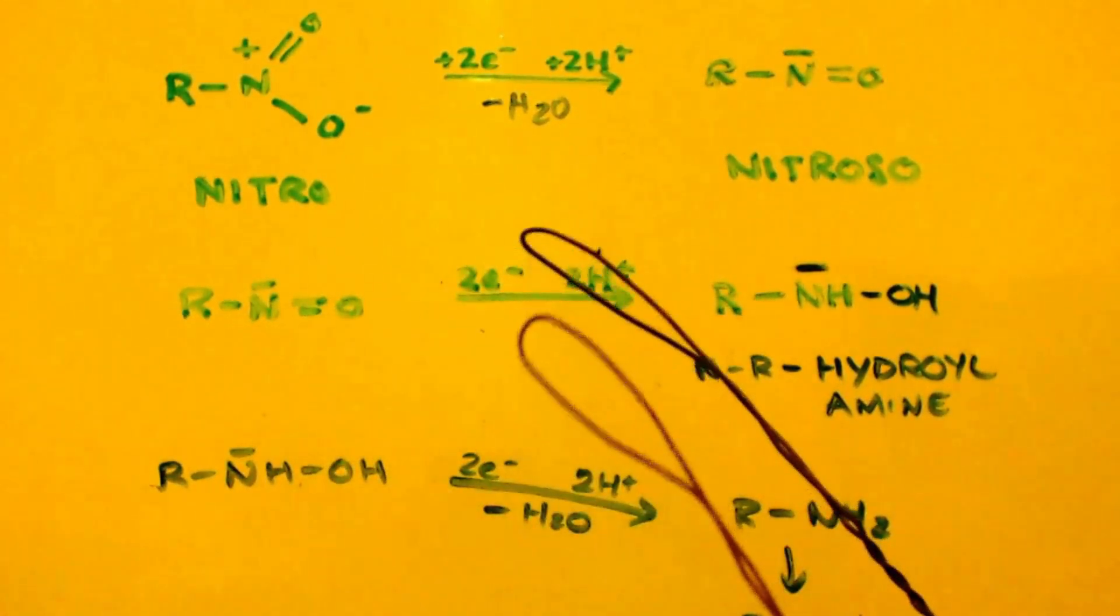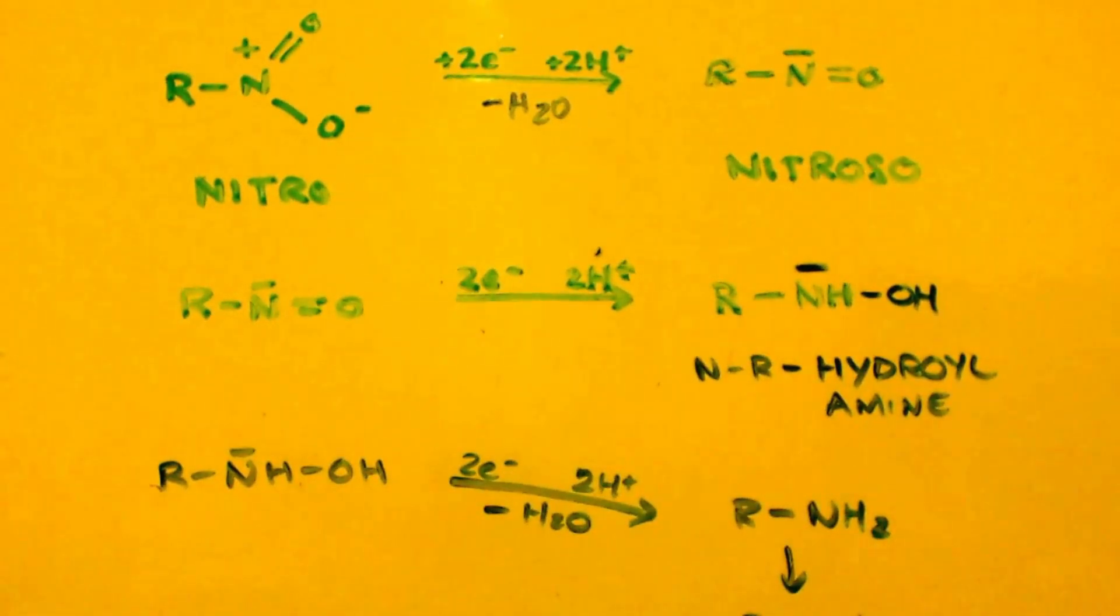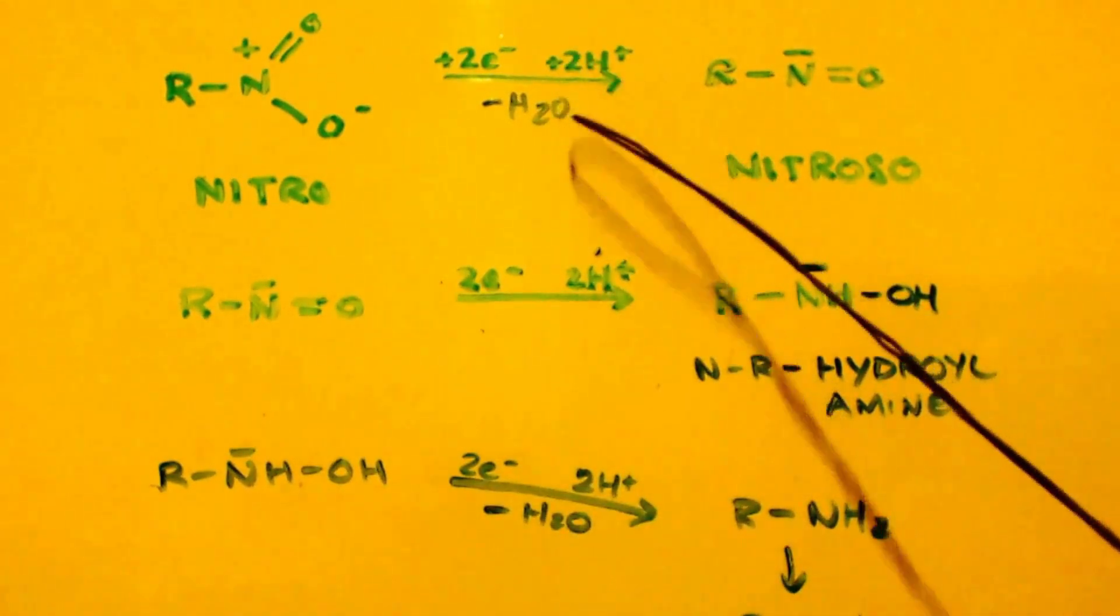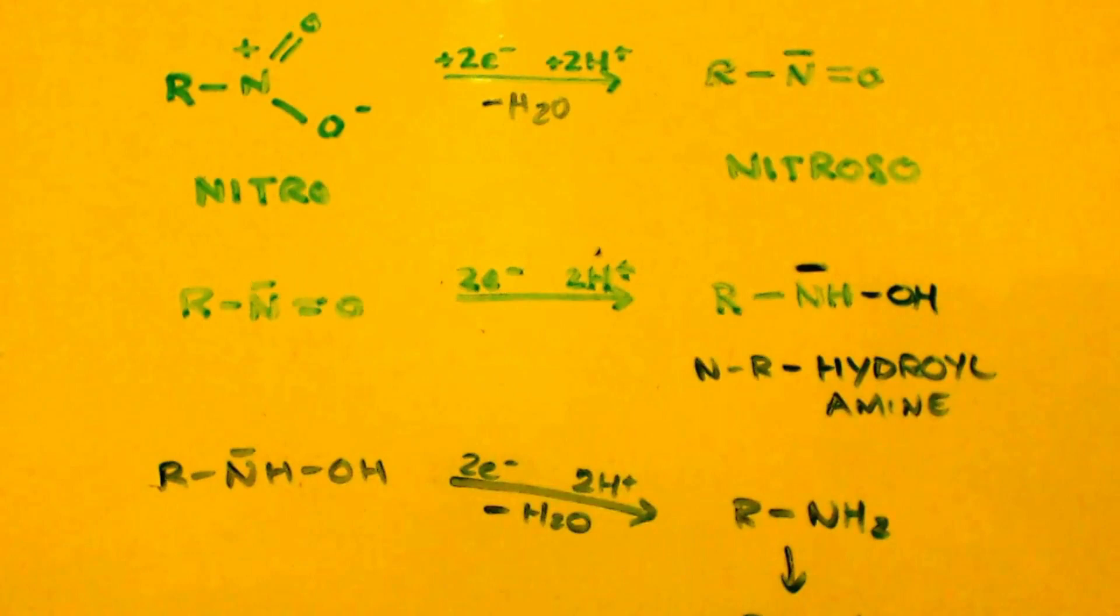Then you take that and you do the same thing again. You add two electrons and two protons. Only this time you're not making any water. And again, like up in the first part, you're going to remove a water molecule. You add two hydrogens, two protons. One goes to the amine group, one goes to the water group. The water group leaves and now you have an NH2 here. So now you have your methyl amine.